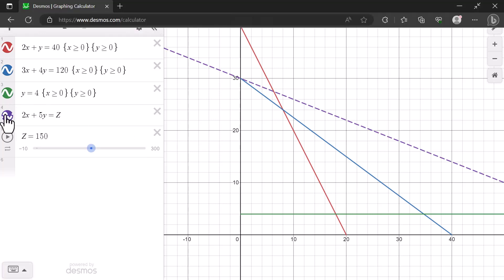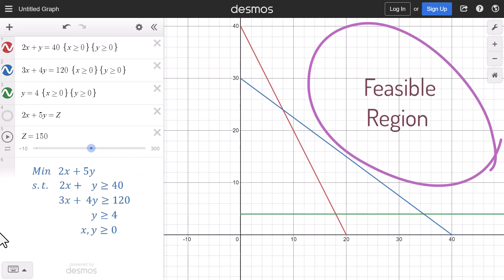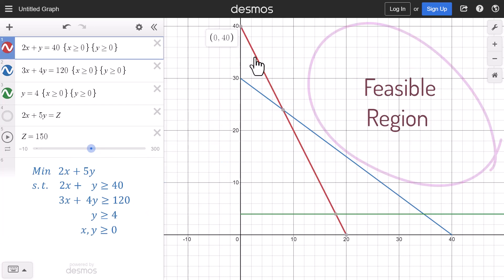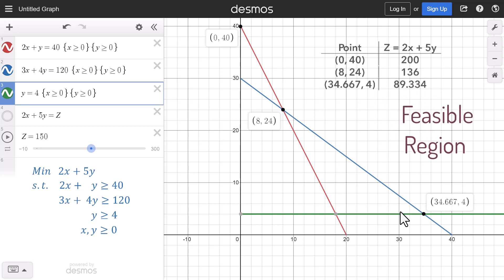Let's hide the objective function line temporarily. Now suppose this were a minimization problem where all constraints are greater than or equal to constraints. Then the feasible region will be to the right here. I can then click and hold the corner points for about 2 seconds to reveal their coordinates. Note again that you might need to click more than once to get the intersection right.